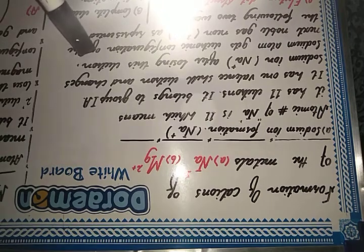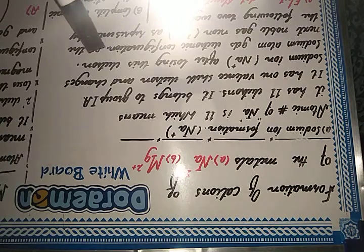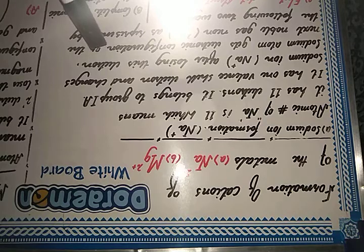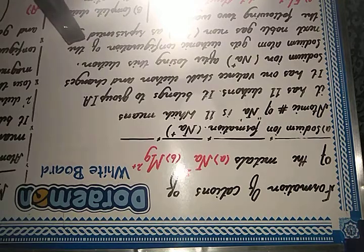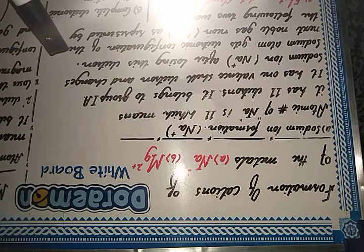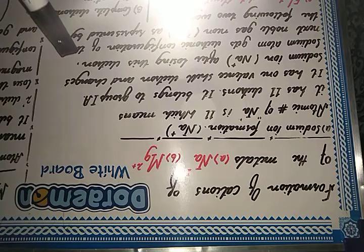Sodium changes into a sodium ion after losing this one electron. To form cations — positive ions — sodium has to get rid of that lonely electron. This is how sodium ion formation occurs.